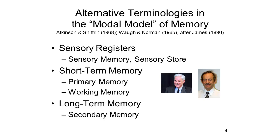The multi-store model of memory became very popular in psychology — so popular, in fact, that it was known as the modal model of memory, the model embraced by the largest number of investigators. They all shared the idea that memory was a collection of storage structures linked by a set of control processes, though the particular names differed from one model to another. Sometimes the sensory registers were called sensory memories or sensory stores. Short-term memory was sometimes called primary memory — it's now often called working memory. Long-term memory was sometimes called secondary memory.